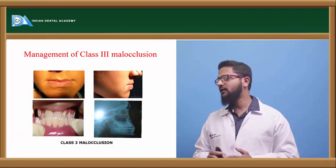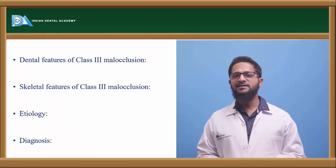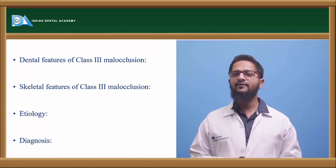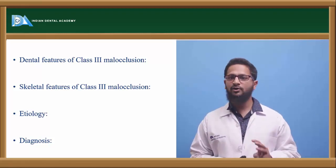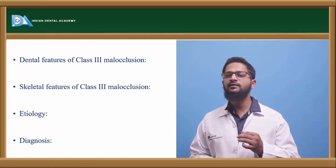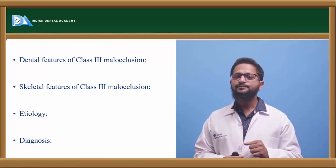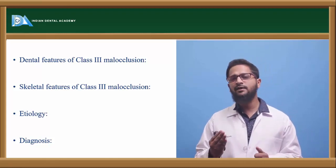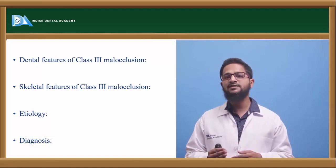Let us now enter into Class III malocclusion. Class III malocclusion is a condition wherein the mesiobuccal cusp of the maxillary molar occludes between the mandibular first and second molars. Looking at dental features, it is characterized by Class III molar relationship, and either the anteriors will be edge-to-edge or negative overjet will be present — meaning the lower anteriors will be ahead of the upper anteriors. In case of severe negative overjet, as a natural compensation, we can see retroclination of the lower anteriors and proclination of the upper anteriors — this is natural dental compensation to mask the skeletal deformity.